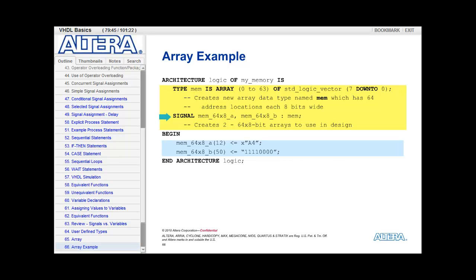This creates two 64 by 8 bit arrays to use in the design. Then, down in the design, to access address locations within the array, I use integer values in parentheses. So in the first line in the architecture body, I am accessing address location 12 within mem 64 by 8a and assigning it the hex value of a4. In the second line, I am accessing address location 50 within the mem 64 by 8b and assigning it F0.